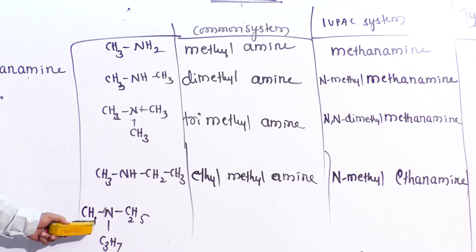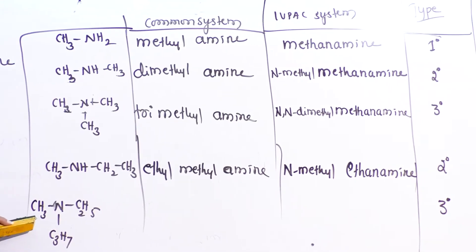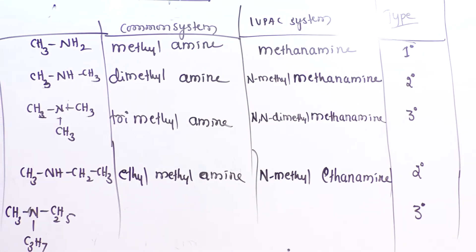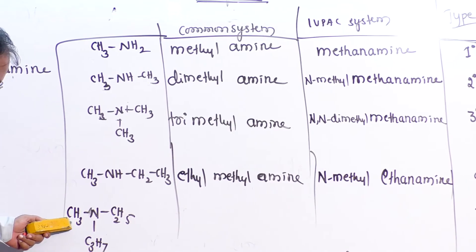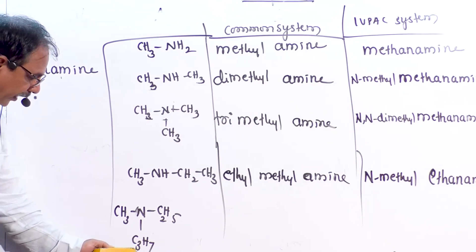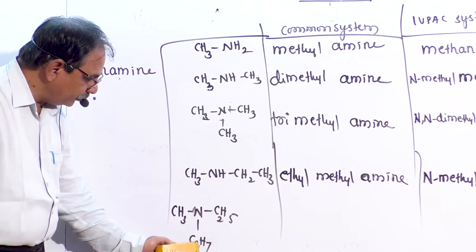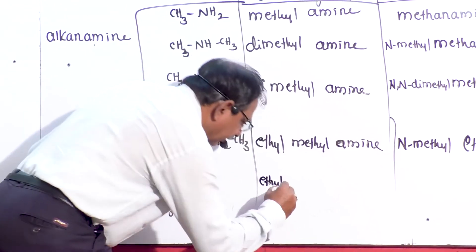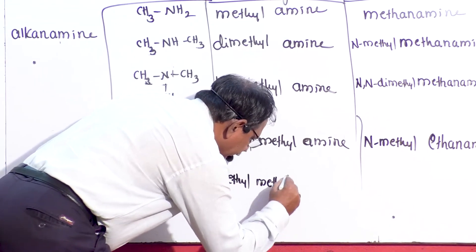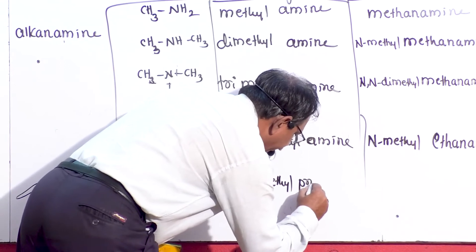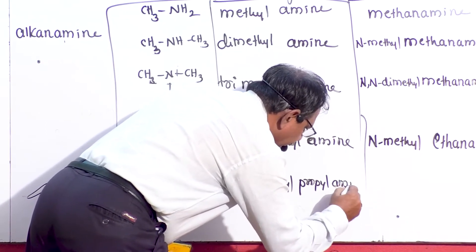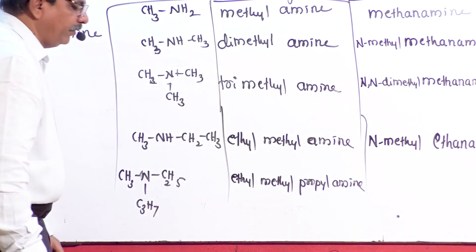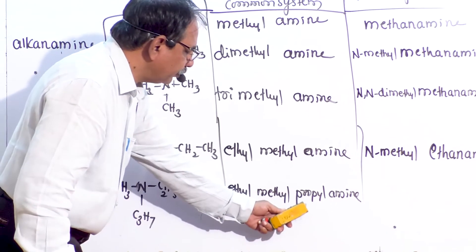These examples all belong to aliphatic amines. Similarly, if an aromatic ring — a benzene or phenyl group — is used instead of an alkyl group, those compounds are called aromatic amines. The difference between aliphatic and aromatic amines is that in aromatic amines, at least one of the groups attached to nitrogen is a phenyl group.